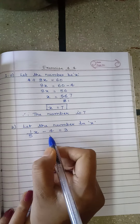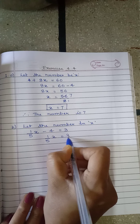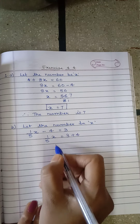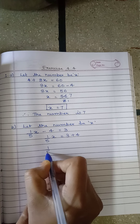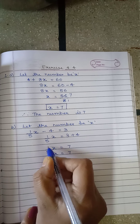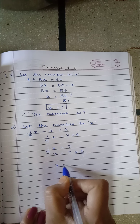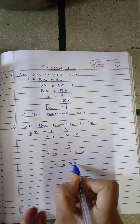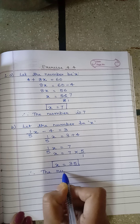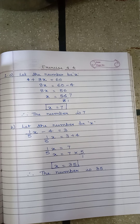Solving for x: keep (1/5)x on LHS and move −4 to RHS, it becomes +4. So (1/5)x = 3 + 4 = 7. Changing side, x = 7 × 5 = 35. Therefore the number is 35.